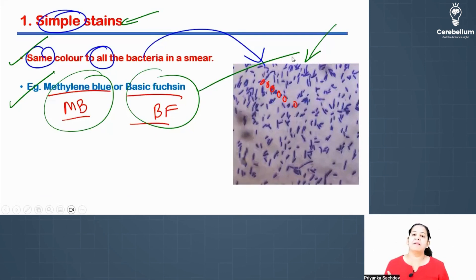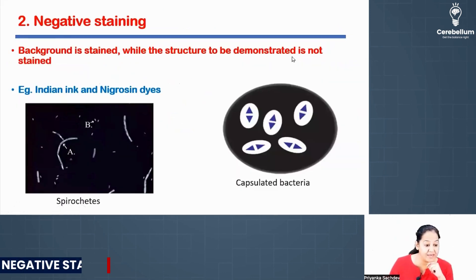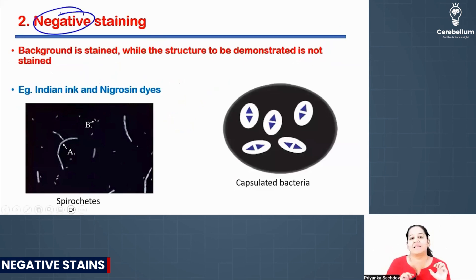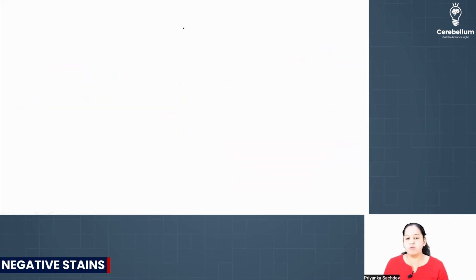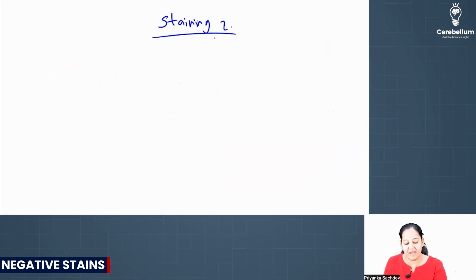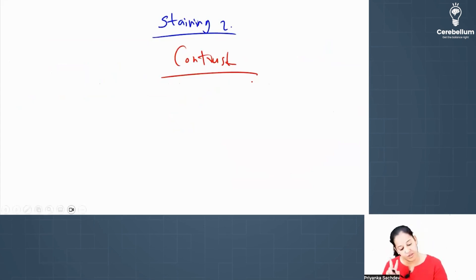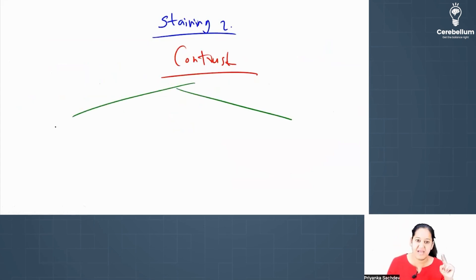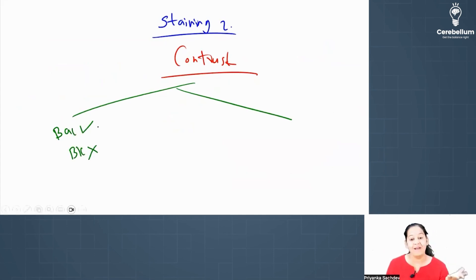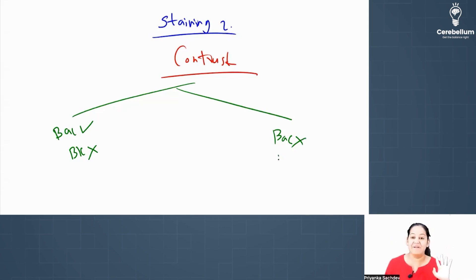After simple stain, the next stain is the negative stain. The meaning is hidden in the name itself. Why is staining necessary? We want to provide contrast so that we can see the bacteria. In simple stain, we stain the bacteria but not the background. In negative stain, we do the reverse — we do not stain the bacteria; bacteria remain transparent.